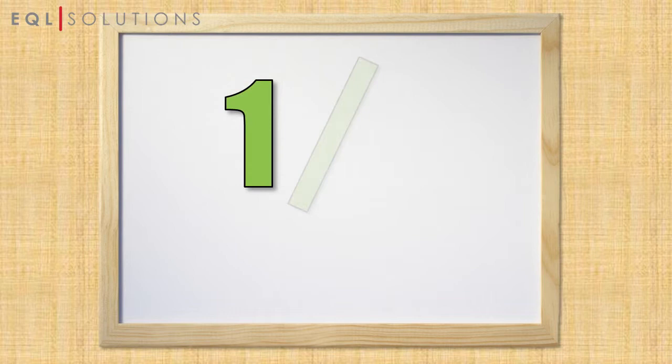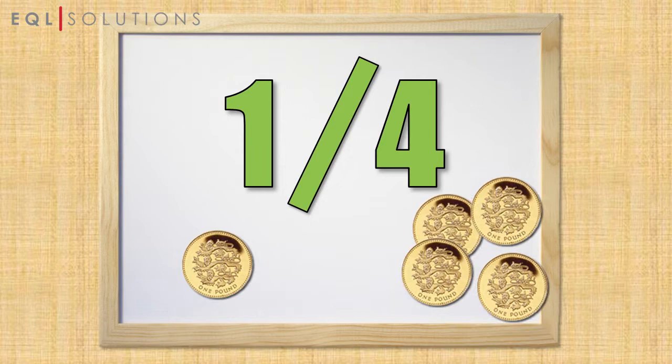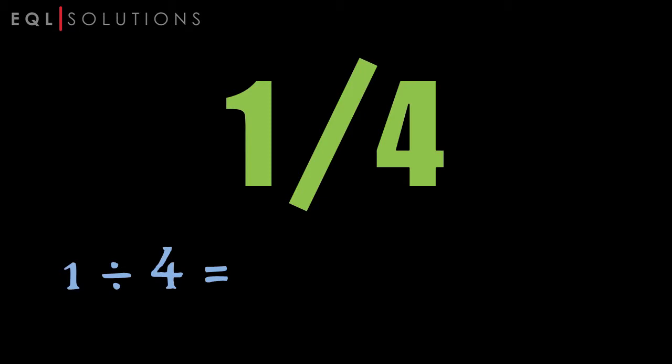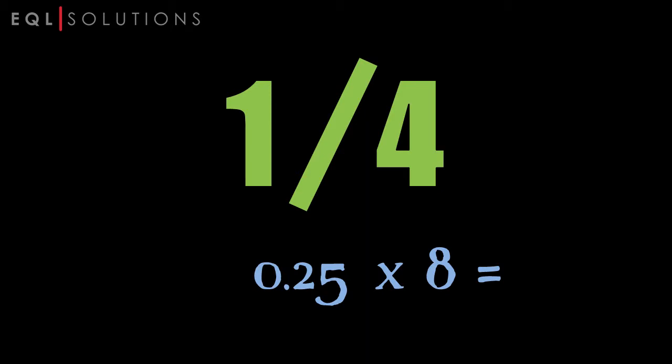Well, this means that you can win 1 pound for every 4 pound that you bet. And you can work out the winnings in exactly the same way as before. 1 divided by 4 is 0.25. Times 0.25 by the stake — that's 8 pound in this case — and you can see that the winnings are 2 pound plus your original 8 pound stake.